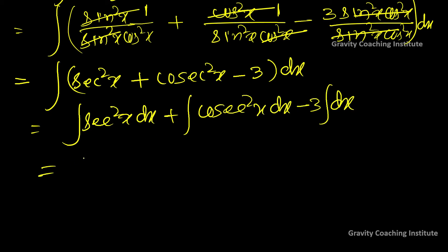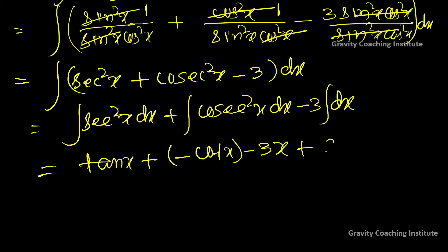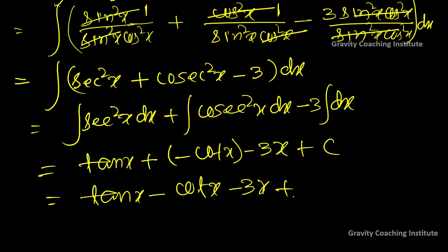Integration of sec²x is tan x, and integration of cosec²x is -cot x, minus 3x plus C. So equal to tan x - cot x - 3x + C. Answer.